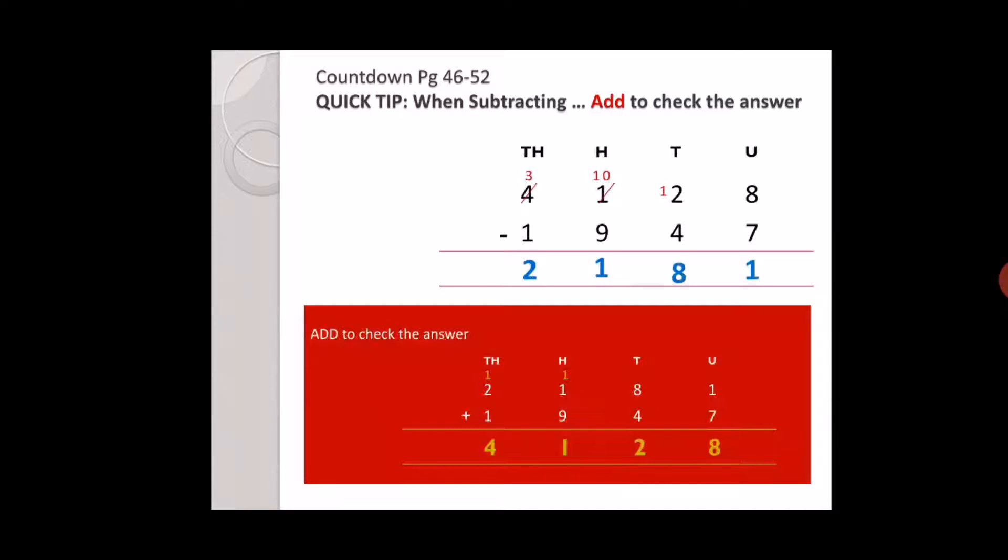One hundred and eighty one. Two will go to the tens place and one will carry to the hundreds place. One plus one is two, two plus nine is eleven. One will go to the hundreds place and one will carry to thousands. Two plus one plus two is three, and three plus one is four.